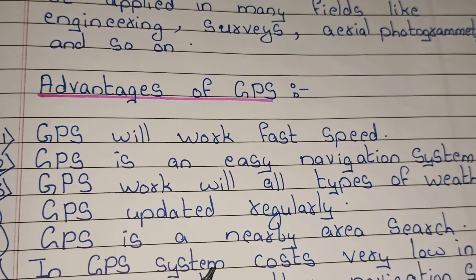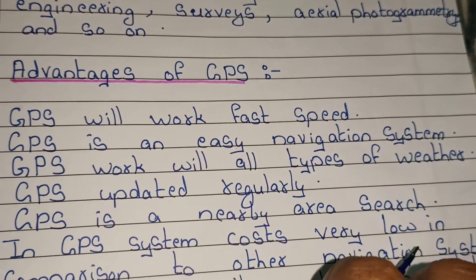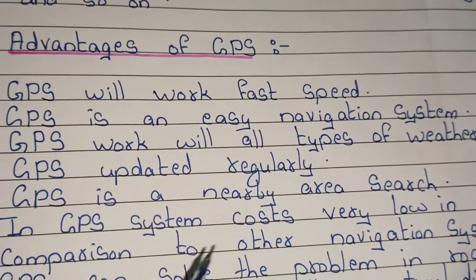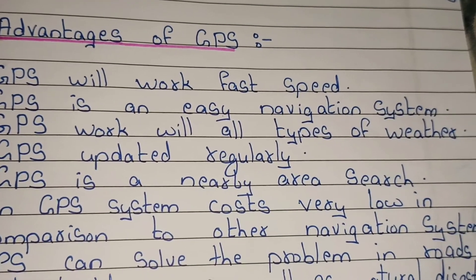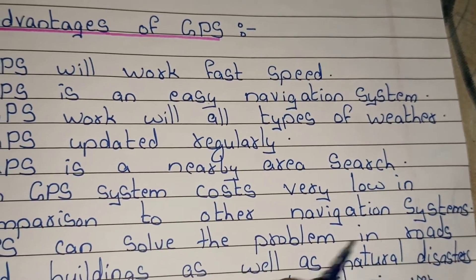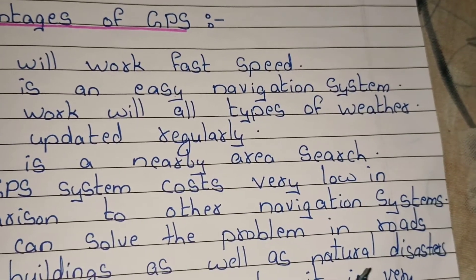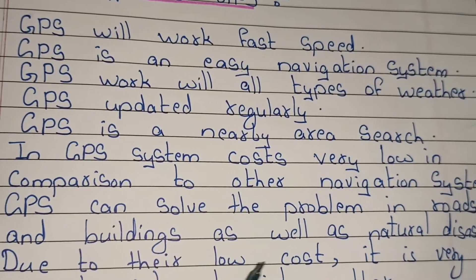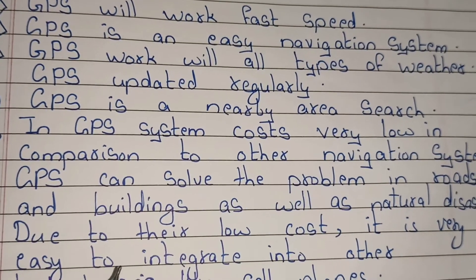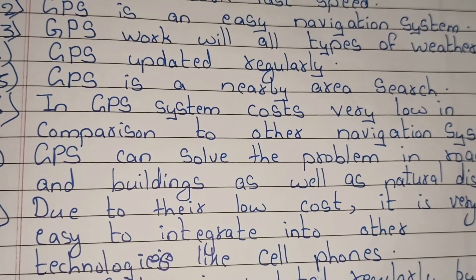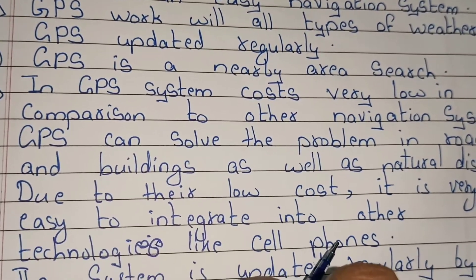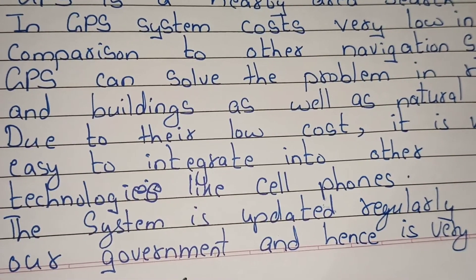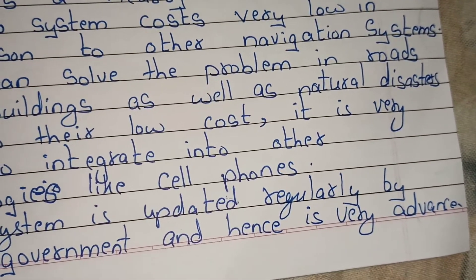In the GPS system, cost is very low in comparison to other navigation systems. GPS can solve problems on roads and in buildings, as well as during natural disasters like earthquakes. Due to its low cost, it is very easy to integrate into other technologies like cell phones. The system is updated regularly by the government and hence is very advanced.